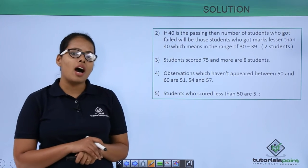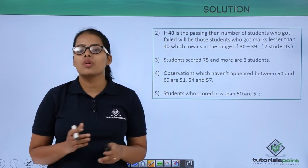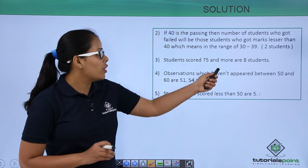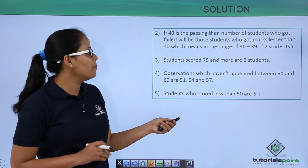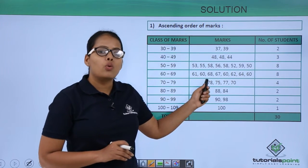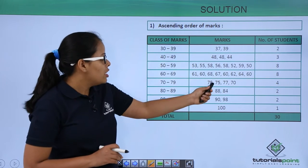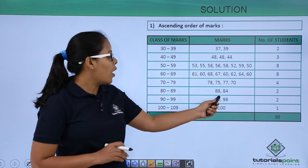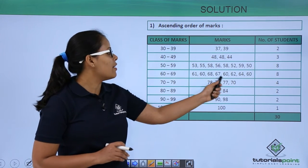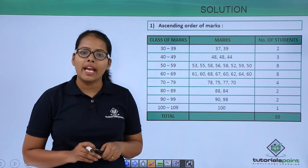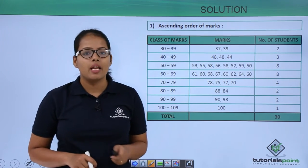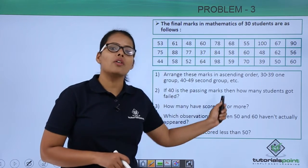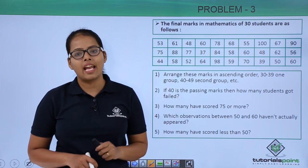In the third problem, how many students scored 75 or more? There are eight students. Counting the marks: 77, 78, 70, and others — counting them gives 1, 2, 3, 4, 5, 6, 7, 8. That's eight because we need to include 75 as well, since the question asks for 75 or more than that. So there are exactly eight students.